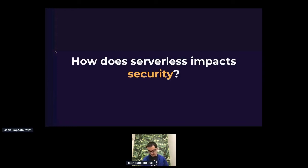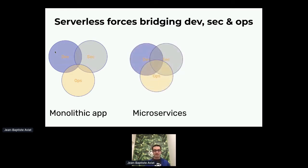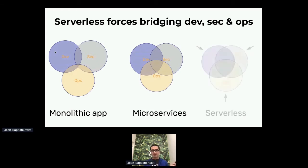Now we share the same assumptions, so the question is: how does serverless impact security? Serverless forces bridging dev, sec, and ops. In monolithic applications, the intersection between those three worlds is pretty small. In microservices, it's much higher because you need great collaboration between ops and dev. And since security becomes part of the software development lifecycle, security teams are embedded in the process — so we see a decent intersection of dev, sec, and ops.